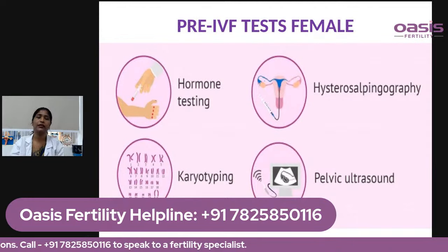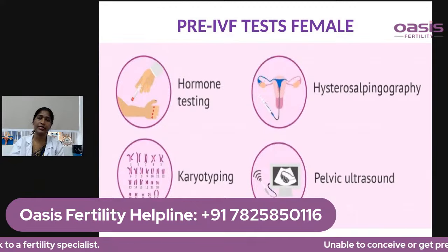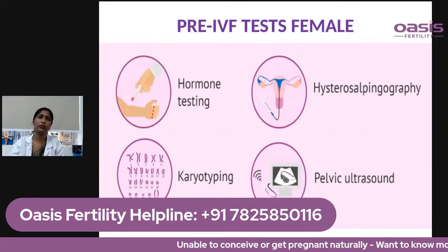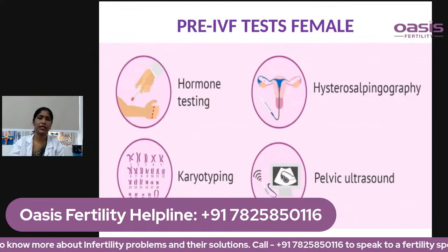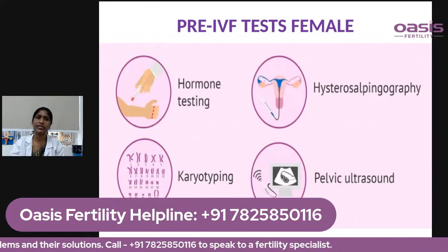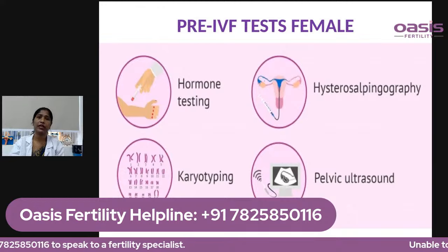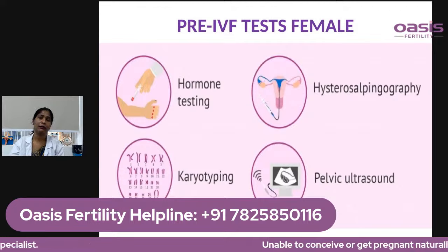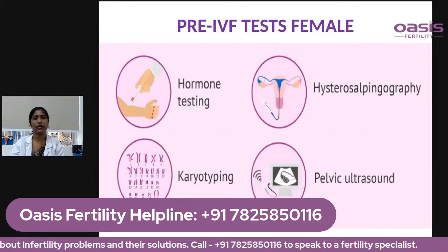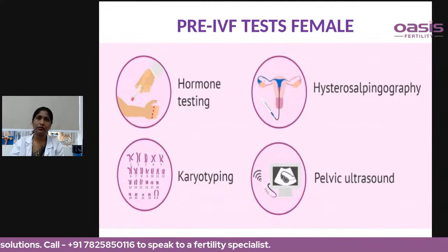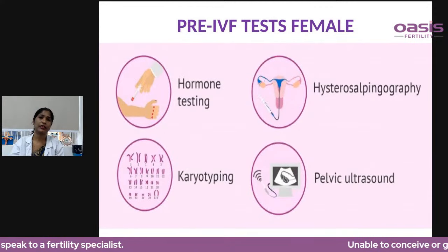For a female, pre-IVF testing commonly includes hormone testing — most importantly the anti-Mullerian hormone (AMH) test — along with thyroid hormones, prolactin, and sugar levels. A hysterosalpingogram is done selectively, not routinely. Genetic analysis is done selectively for those with multiple failed IVF cycles, a family history of genetic disease, or repeated miscarriages. A pelvic ultrasound is done routinely to assess ovarian reserve, count antral follicles, and evaluate the uterus.